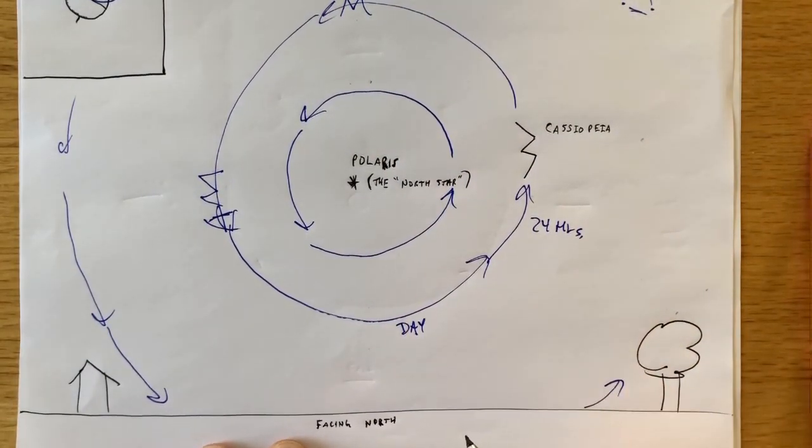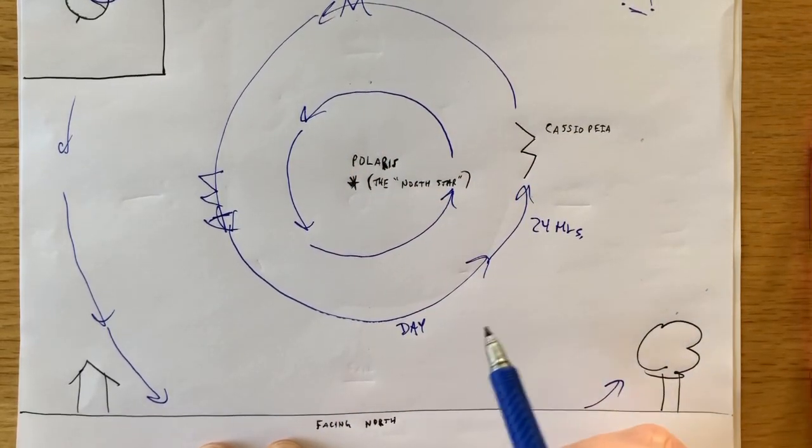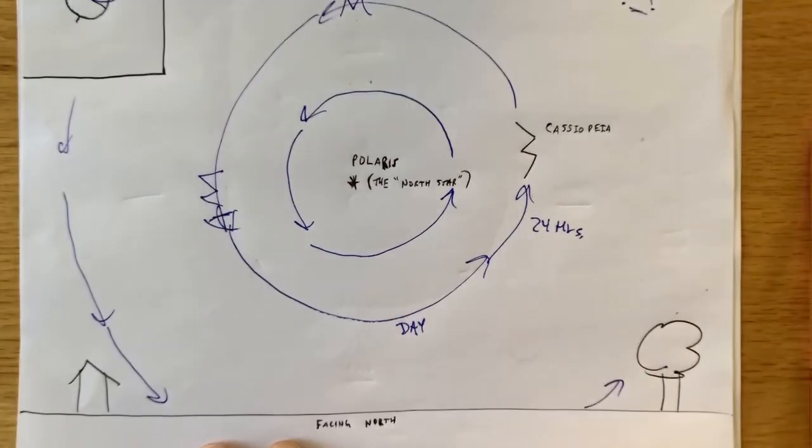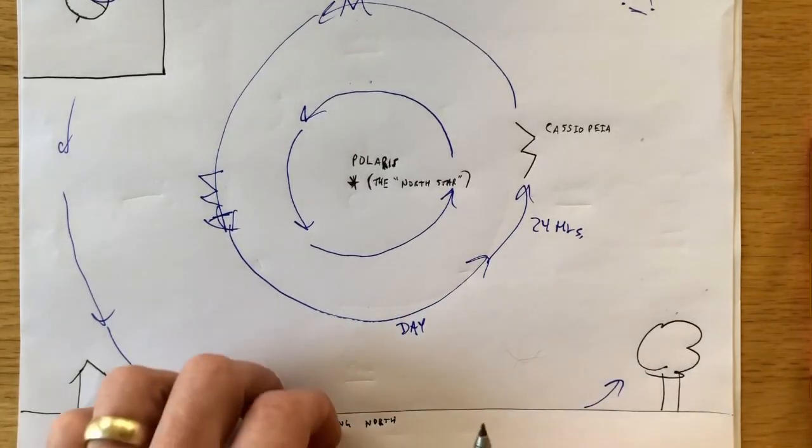So anyway, this is what constellations do if you stay up all night. They rotate counterclockwise around Polaris because the Earth is spinning. That's what causes the motion, and Polaris is directly above the North Pole. Hope you learned something new today.